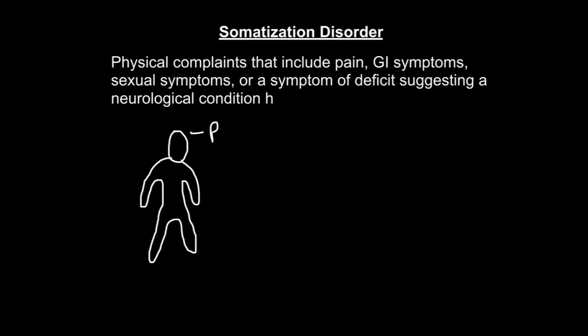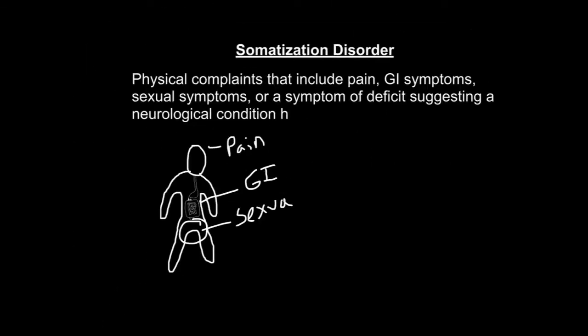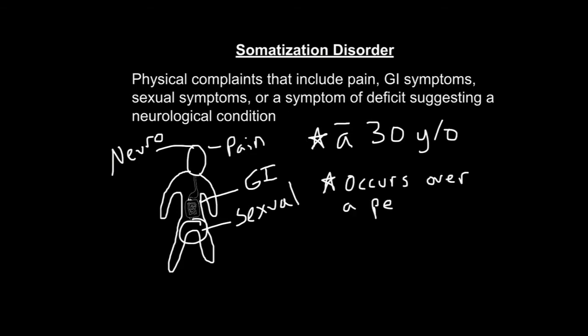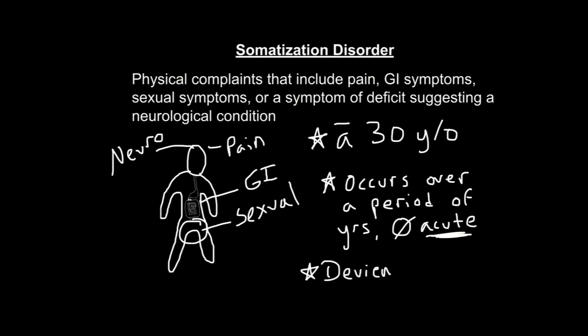Somatization disorder is characterized by physical complaints that include pain, GI symptoms, sexual symptoms, or symptoms of deficit suggesting a neurological condition. This often begins before the age of 30 and occurs over a period of years; therefore, it's not acute. This disorder may result in significant impairment in social, occupational, or other important areas of functioning.